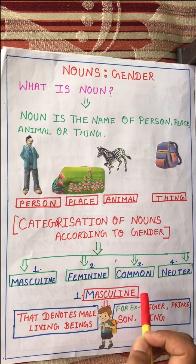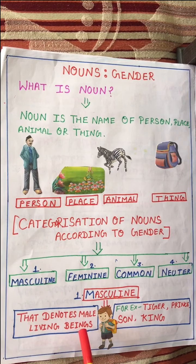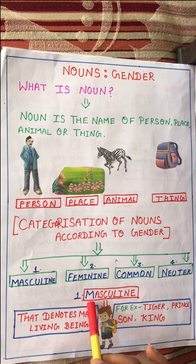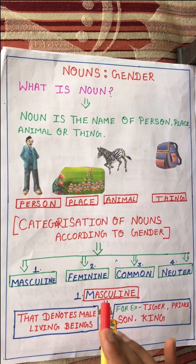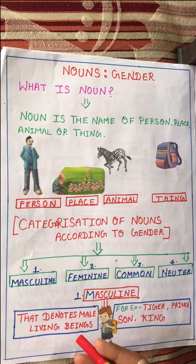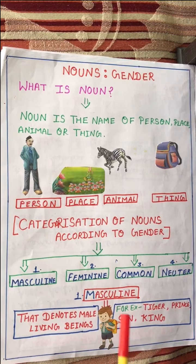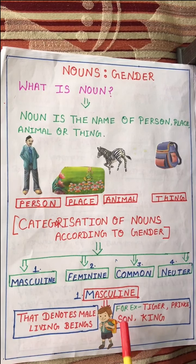First is masculine gender. What is masculine gender? The noun that denotes male living beings is called masculine gender. Jo kisi bhi male living beings ke baare mein batata hai. Living beings are those that can move — like us, humans. For example: tiger, prince, son, and king — these all are masculine gender. Tiger ka feminine hoga tigress, and prince, son, king are all masculine.